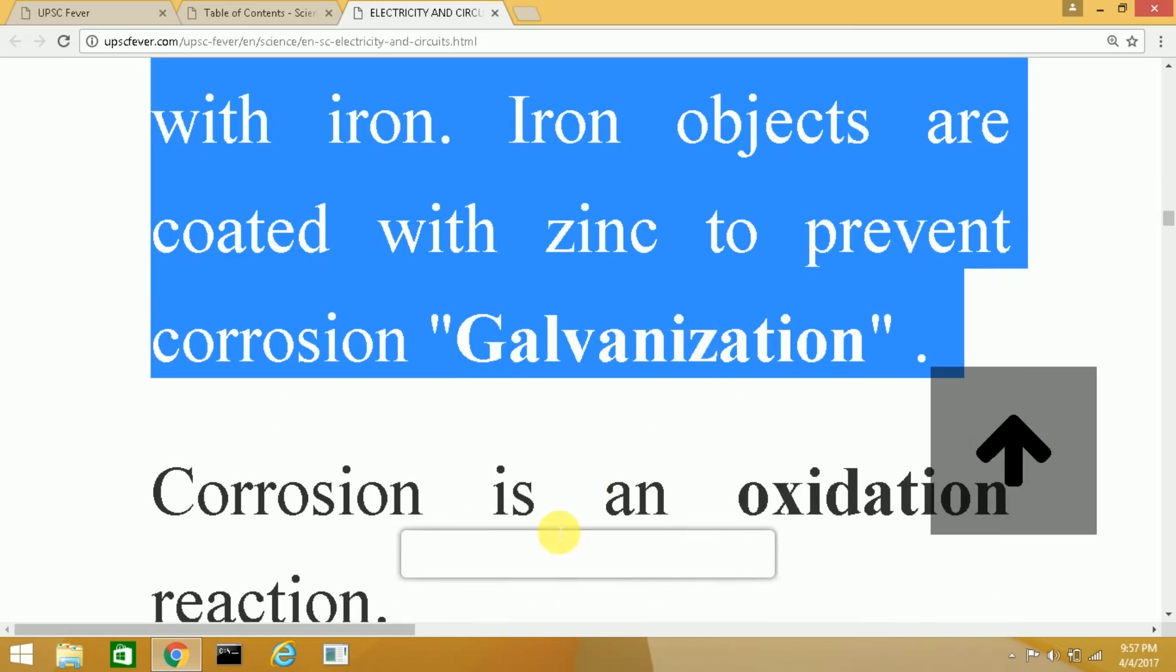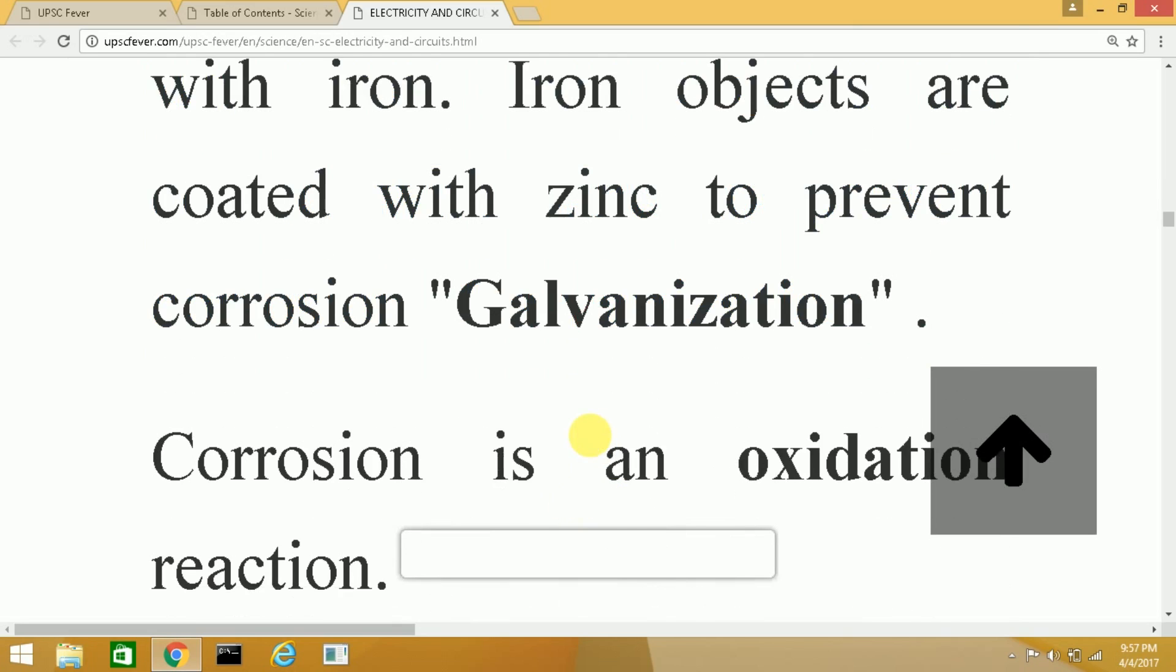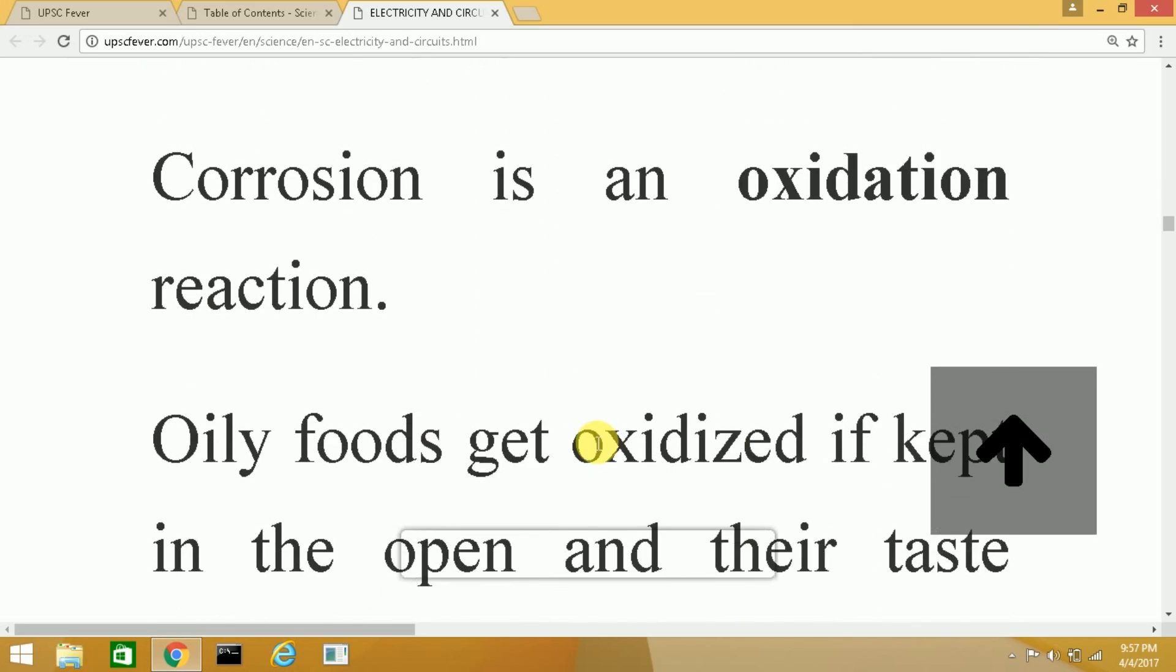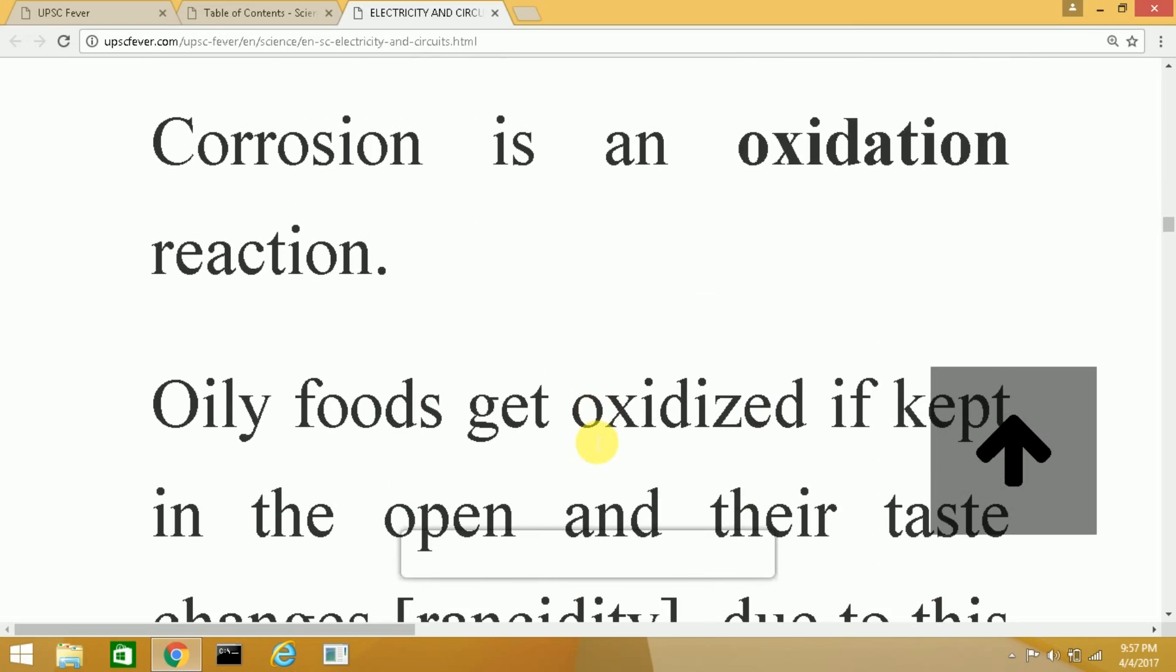Corrosion is an oxidation reaction. Whenever you see that iron is rusted, you can say that it is due to oxidation reaction.